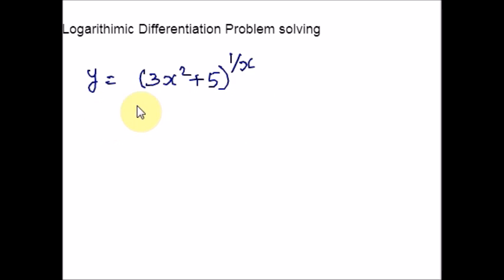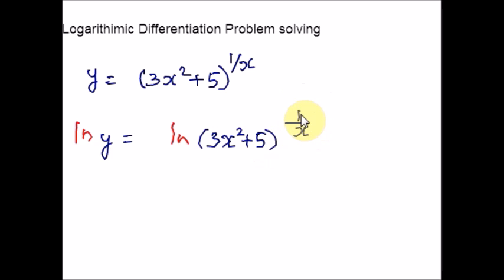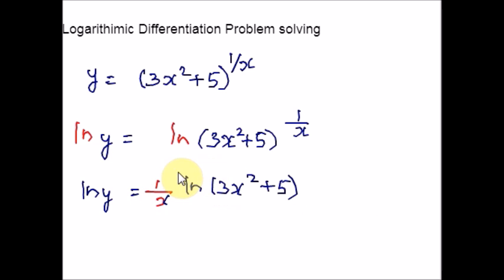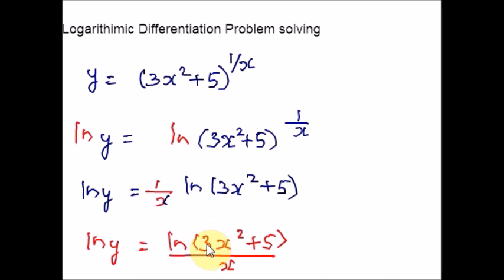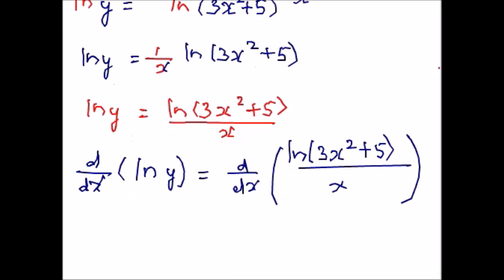Let's see what happens when I take the natural log. On the right side of the equation the exponent is shifted to the coefficient's place, which can be written as 1 times ln of 3x squared plus 5. Now let's differentiate both sides. The left-hand side requires the chain rule since y represents a function of x. We are going to use the quotient rule and chain rule on the right-hand side. Differentiating gives 1 over y times y dash on the left side by chain rule.